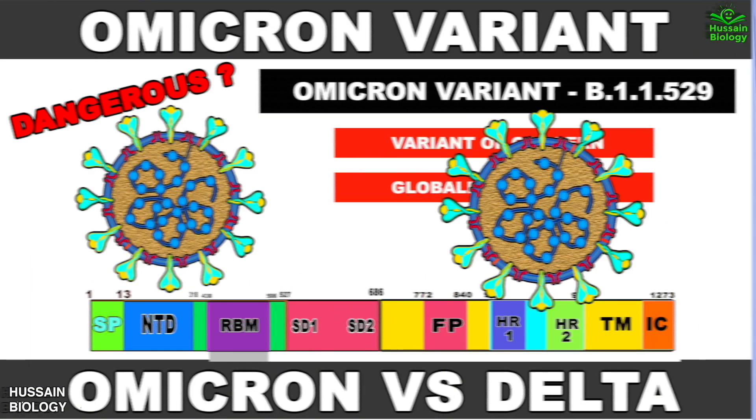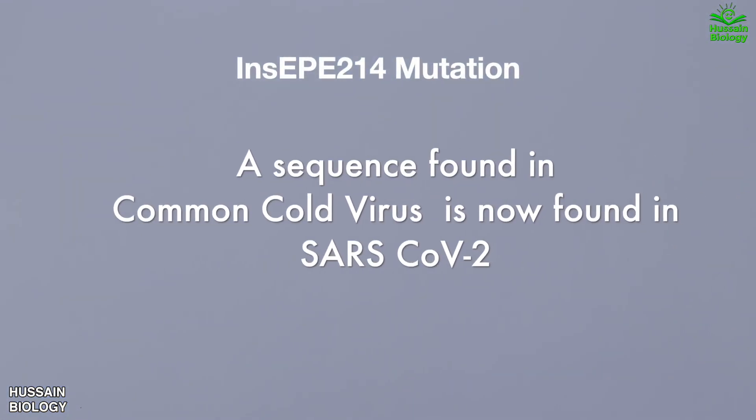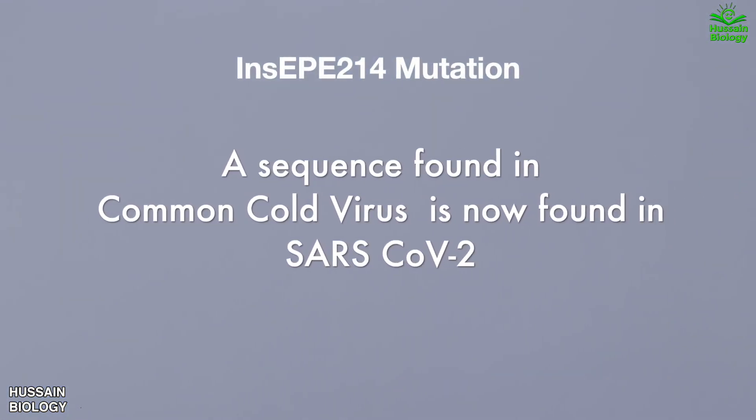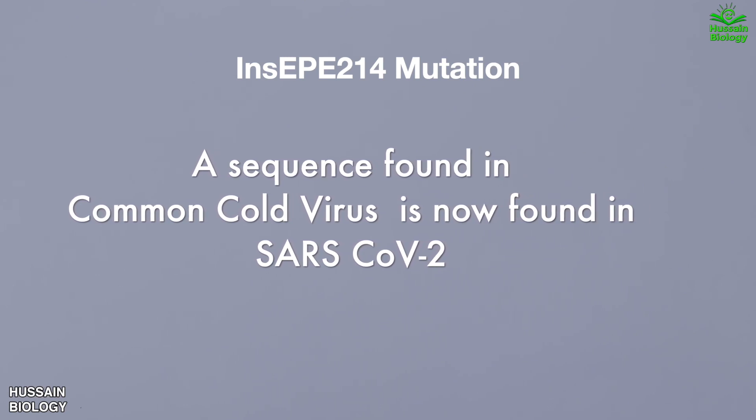We have been into Omicron variant pretty quick, making assumptions, getting updates in which there are some good news, there are some bad news and much more. And one update among that is the presence of sequence of codons from HCOV229E virus into the Omicron variant. So basically, what's found in the common cold virus is now found in the Omicron variant of SARS-CoV-2.